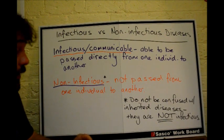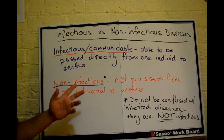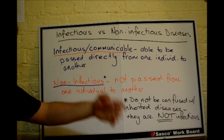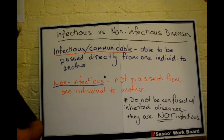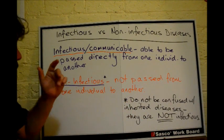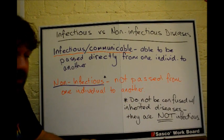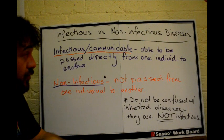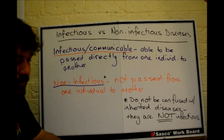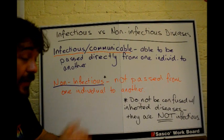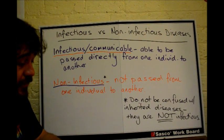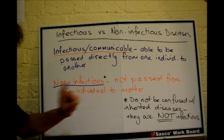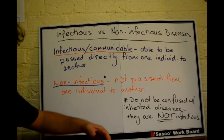First off, we've got a couple of definitions. 'Infectious' is interchangeable with the word 'communicable,' by the way — it can be communicated from one person to another. So an infectious disease is able to be passed directly from one organism to another organism — from one individual to another individual.